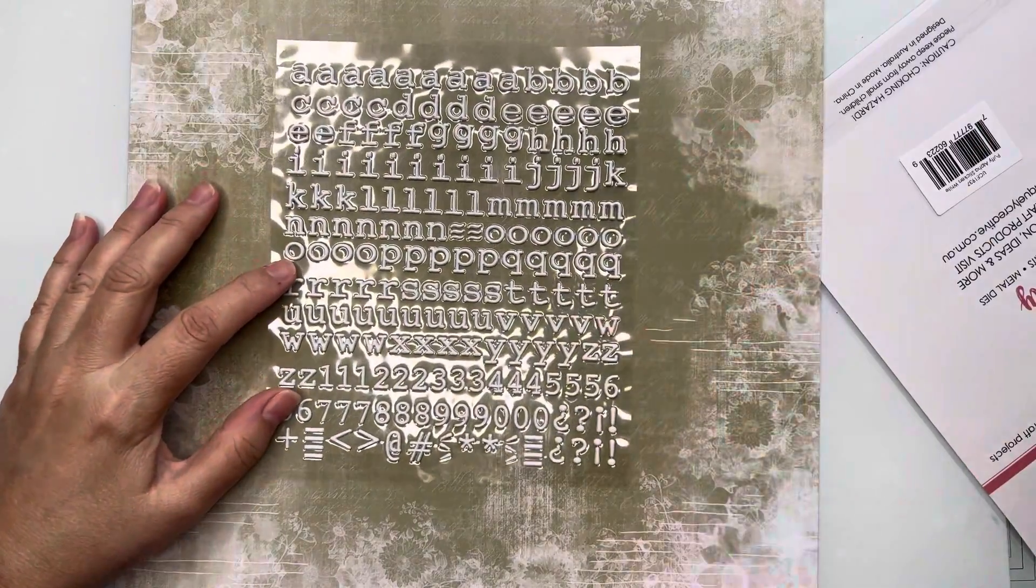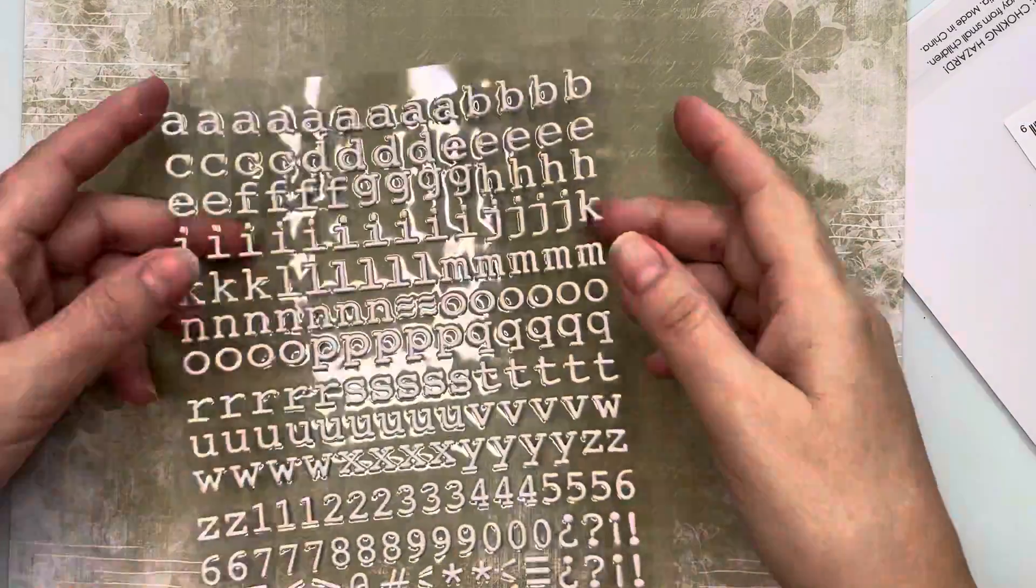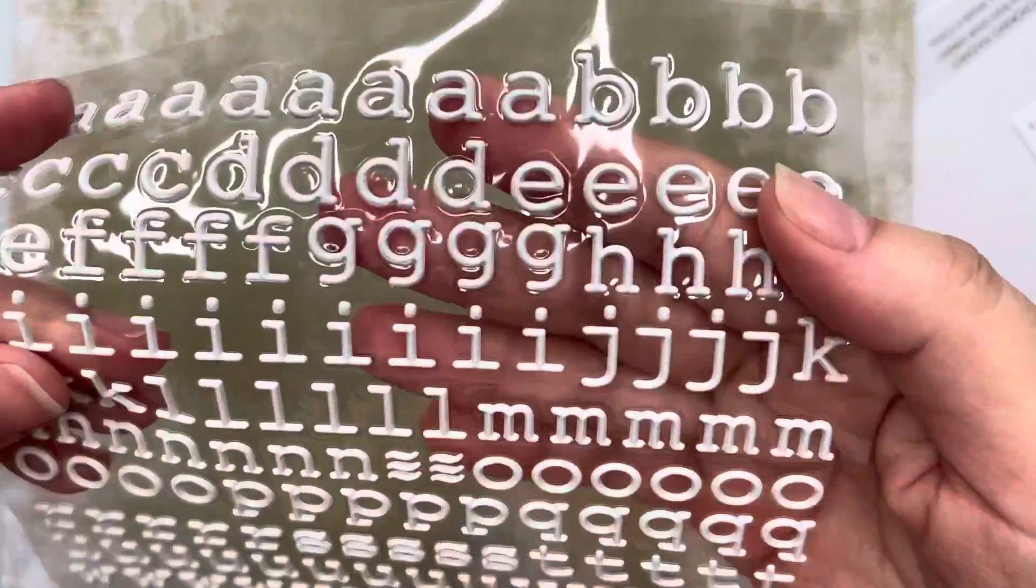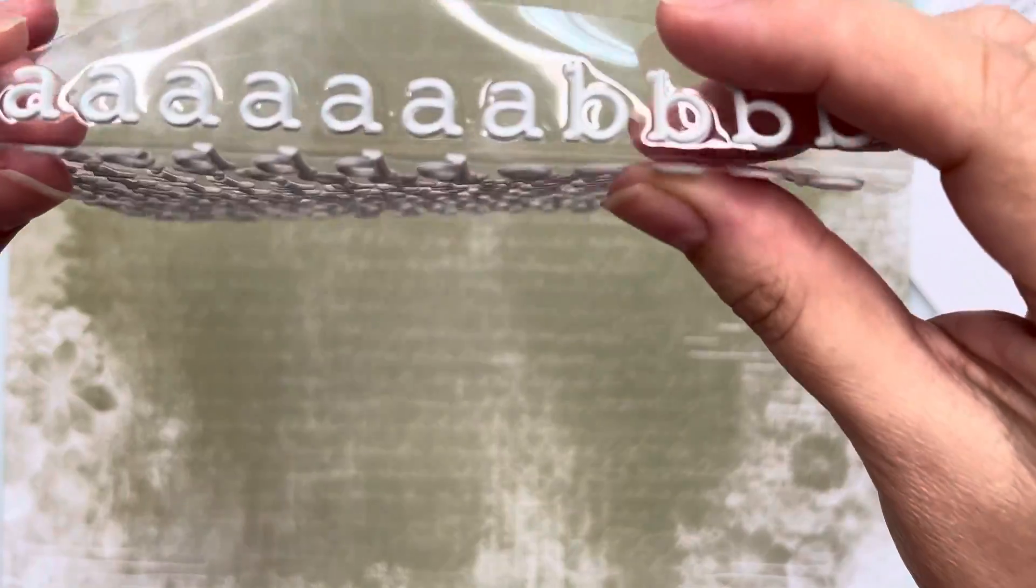So we've got lots of dimension in the letters and they're a firm puffy sticker, not one of the soft squishy type. And we get lots of numbers, letters, and symbols.